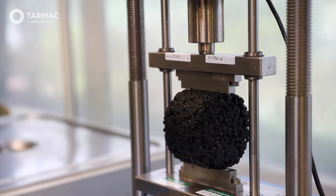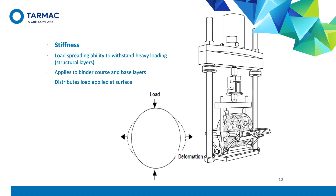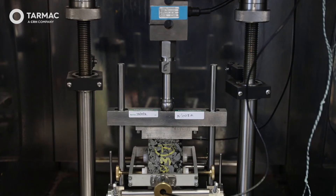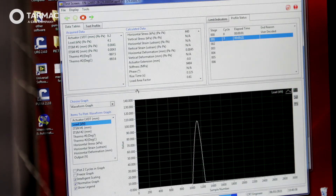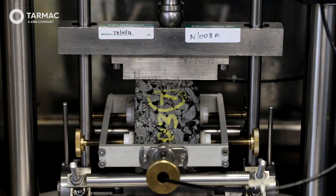Specifications typically call for a minimum retained strength of 70 to 80%. The stiffness of a mix is measured using the indirect tensile stiffness modulus test, or ITSM. Tests are carried out on compacted specimens at controlled loading rates and are used to rank bituminous materials as a guide to relative performance in the pavement. This can also be used to estimate the structural behaviour in the road.